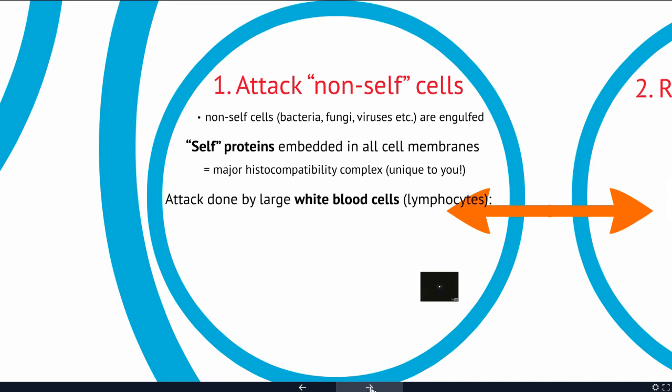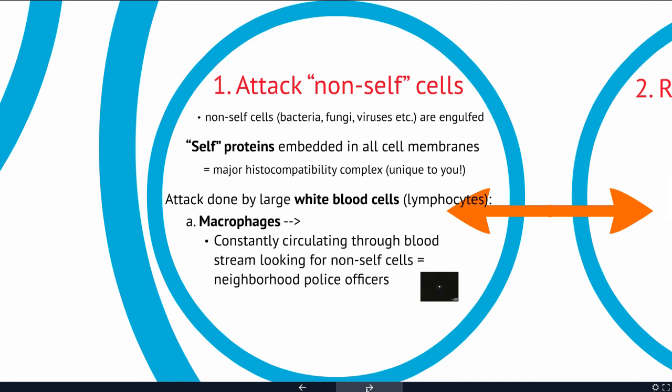The attack is done by large white blood cells called lymphocytes — 'cyte' refers to cell. There are many different kinds of white blood cells. The macrophages are large white blood cells that circulate through the bloodstream and look for non-self. Think of these as neighborhood police officers looking for individuals that don't seem to fit — they pull them over, check their ID, and if they're not supposed to be there, they're taken away. They're not looking for a particular individual, just making sure everything is safe.